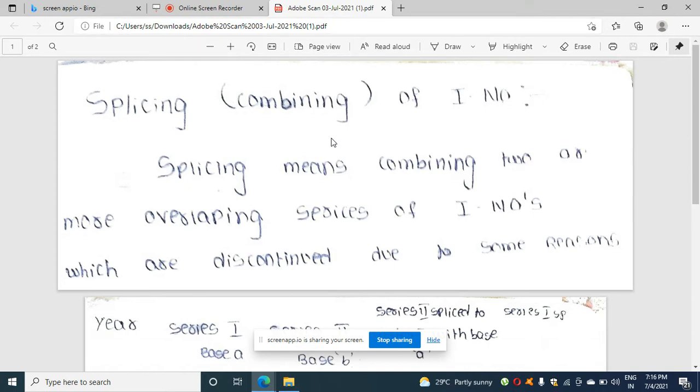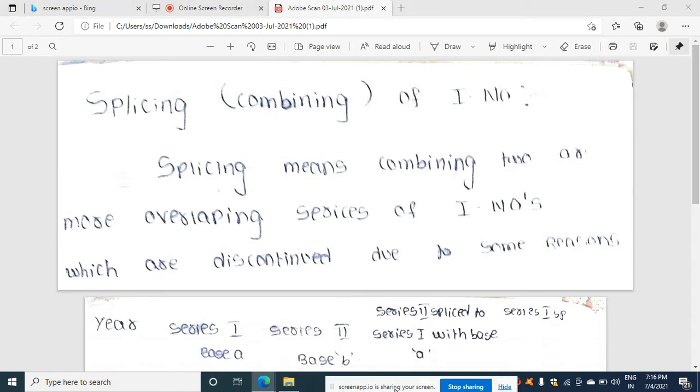Splicing means combining of two or more series of index numbers which are discontinued due to some reason. I am going to give an example for this. Students, suppose you have one series, series number one.